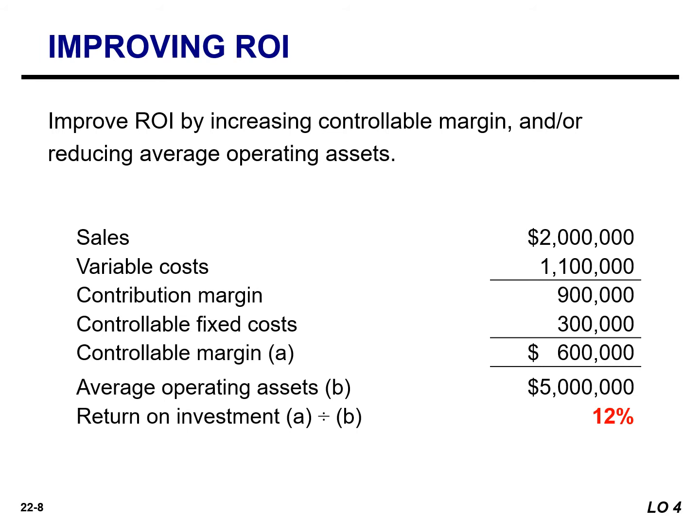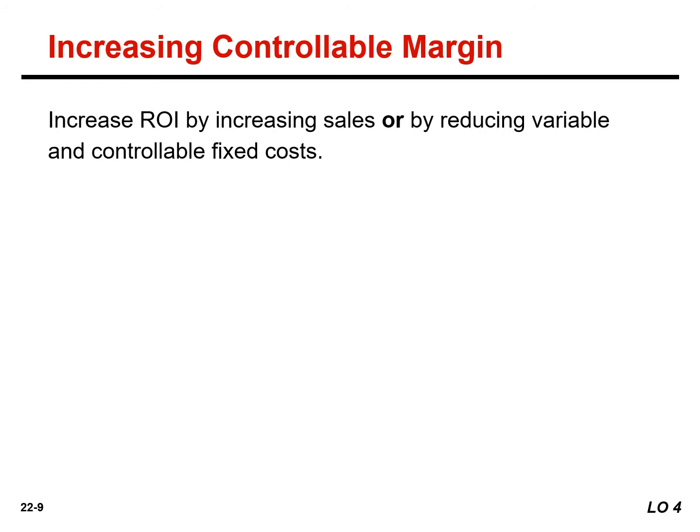Managers of an investment center can improve ROI by either increasing controllable margin and/or reducing average operating assets. To illustrate, we will use data from the Laser Division.